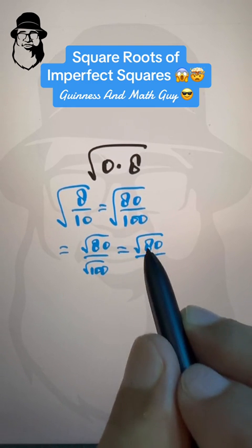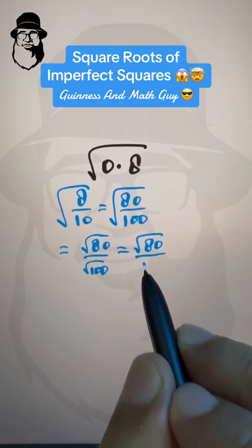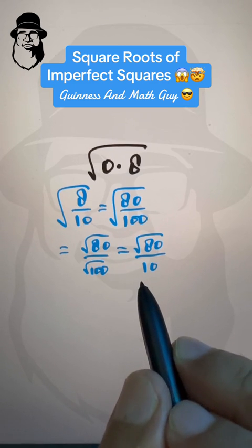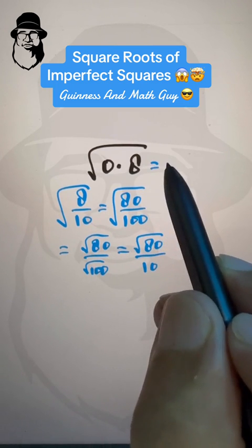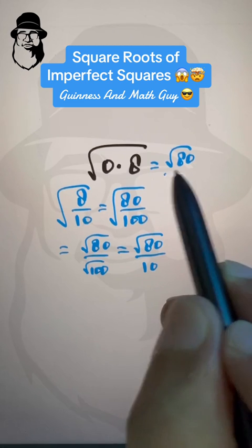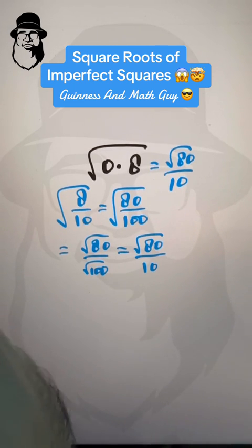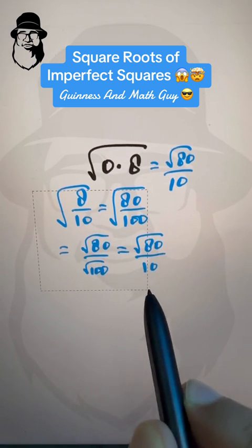Now, we can do square root of 80 over square root of 100, and square root of 100 is 10. So, whatever our answer to square root of 80 will be, we'll divide it by 10 in the end. So, let's get rid of this.